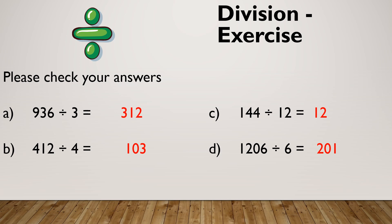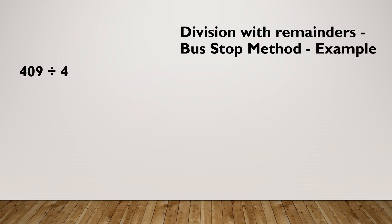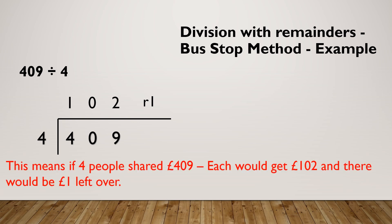Let's look at division with remainders. If I wanted to do 409 divided by 4, I would set everything up exactly the same. How many 4's go into 4? There's 1. How many 4's go into 0? There isn't any. How many 4's go into 9? There's 2, and my remainder 1's expressed like that. For example, if 4 people were sharing £409, each person would get £102 and there'd be a pound left over.